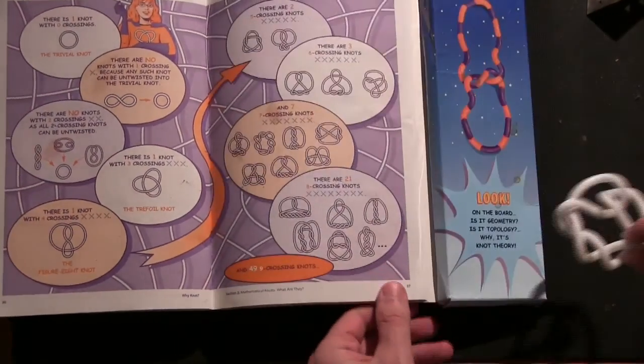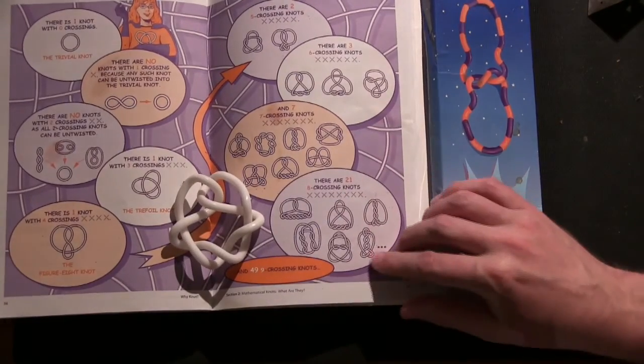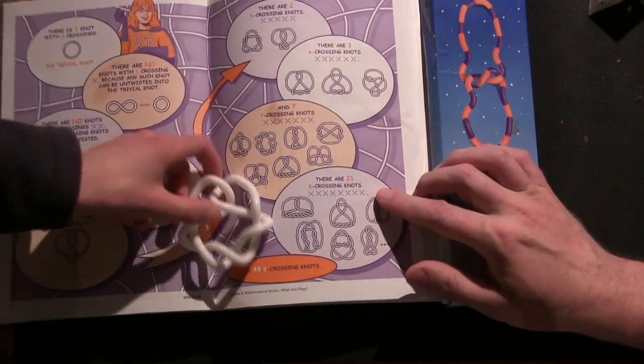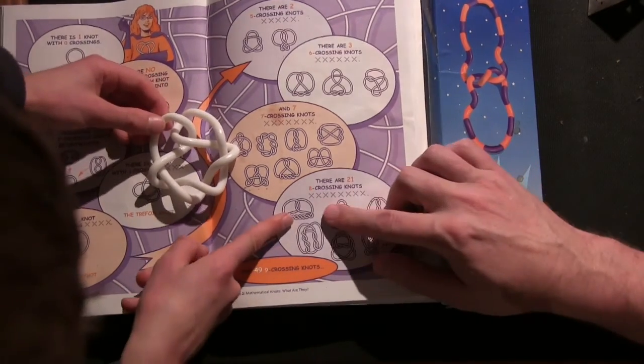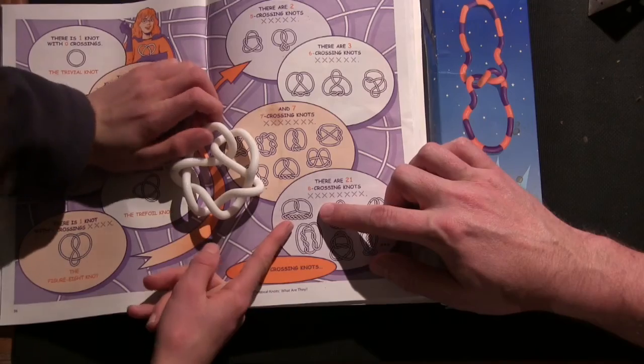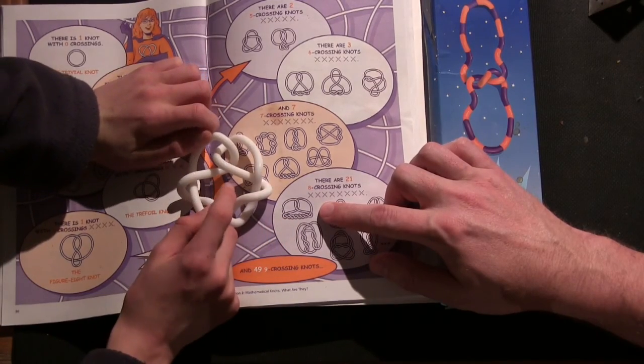All right, so let's pull out your knot. This was the one with eight crossings. And which knot, there are 21 knots with eight crossings. Which one was this? This one here. So how can we tell that that's the same knot? Looks like a pretty challenging problem.